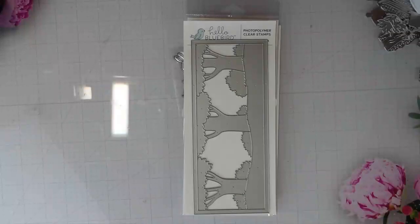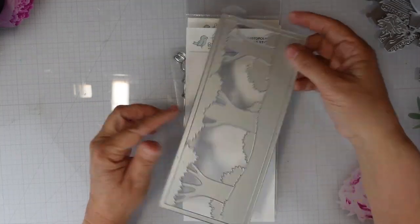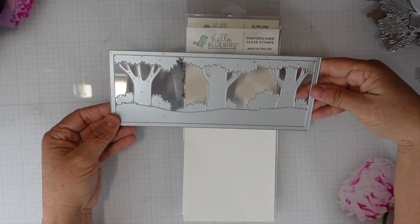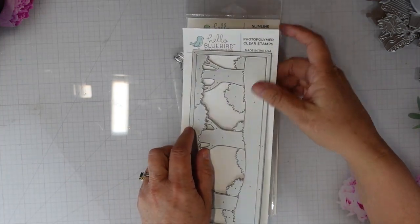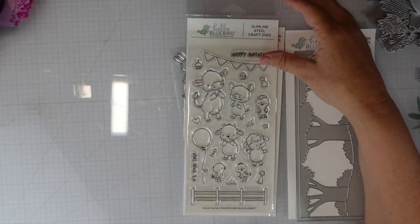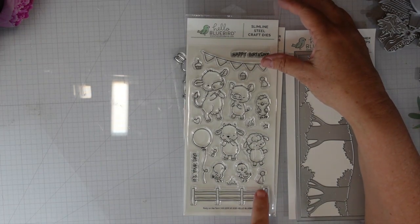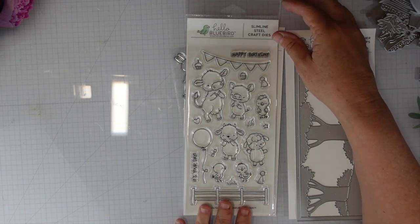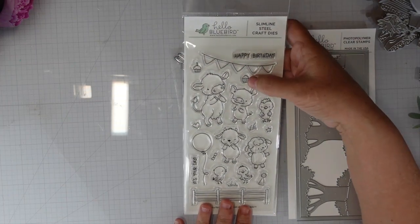This always gives us a great opportunity to pull that out. From Hello Bluebird I have the Summer Wood Scene die, which is a three and a half by eight and a half inch die. I'll be using the Party on the Farm with birthday elements and the lamb, and finally I'll be using the Pig Out.